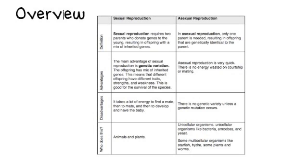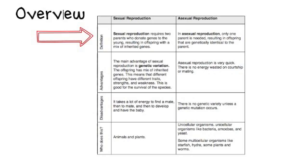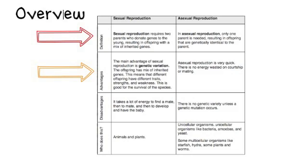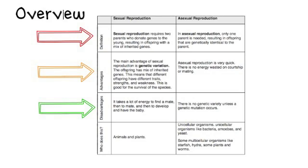Here's an overview of sexual and asexual reproduction. Sexual reproduction requires two parents who donate genes to the young, resulting in offspring with a mix of inherited genes. Asexual reproduction has only one parent and results in offspring that are genetically identical to the parent. The main advantage of sexual reproduction is genetic variation — offspring have different traits, strengths, and weaknesses, which is good for the survival of species. Asexual reproduction is very quick and there's no energy wasted on courtship and mating. Disadvantages: sexual reproduction requires a lot of energy — think about how much energy species spend on courting rituals, getting the mother food, delivering a child, or protecting their eggs.